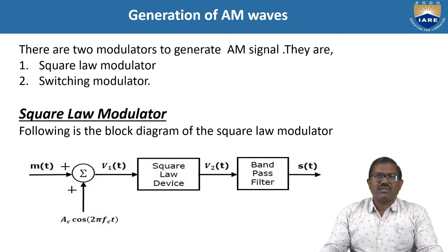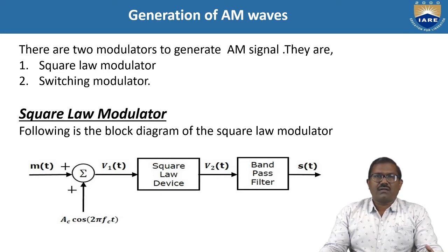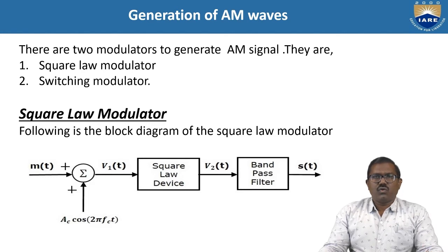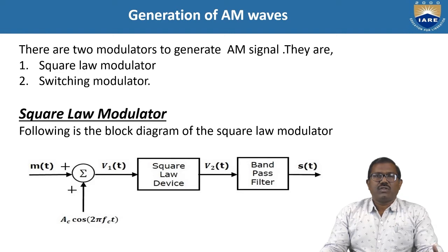One is the square law modulator and the other is the switching modulator. Here we use one device — either a diode or transistor — for the operations of these modulators to generate the AM signal, but generally we use a diode. Now let us start with the square law modulator. In the square law modulator, we have three parts mainly: one is the summer, second is the square law device, and third is the bandpass filter. For the summer, we give M(t) as the message signal and C(t) as the carrier.